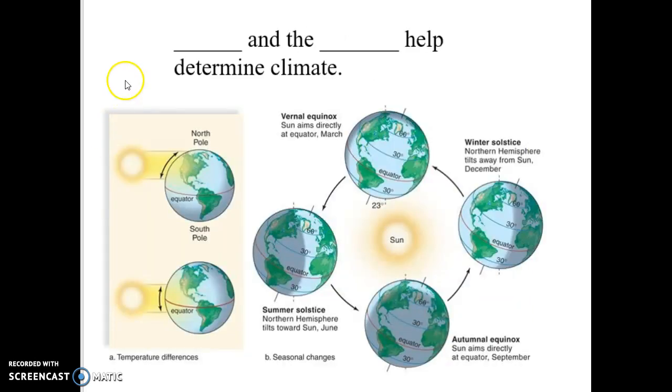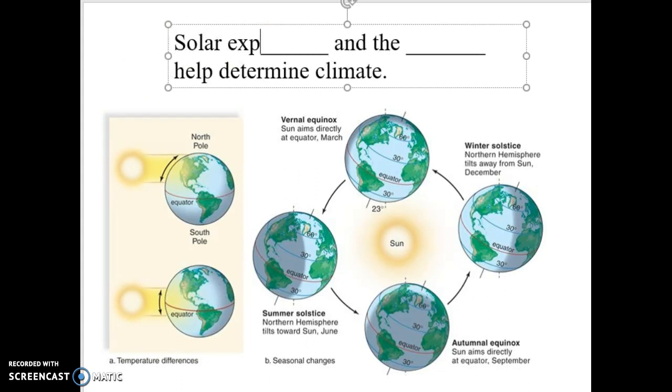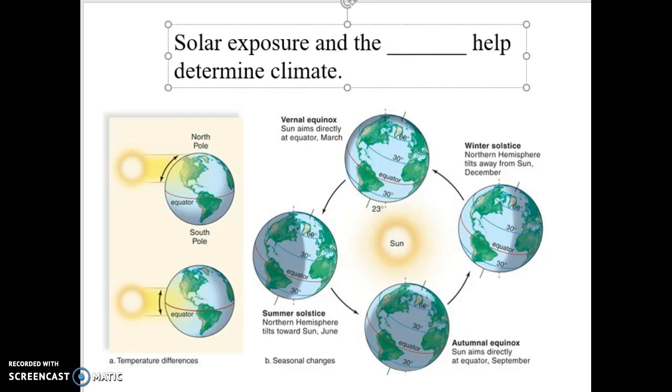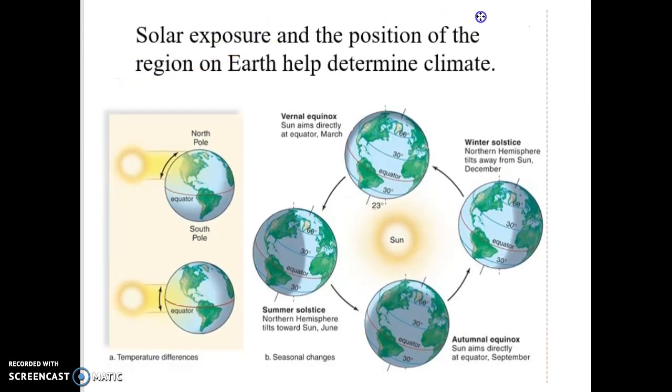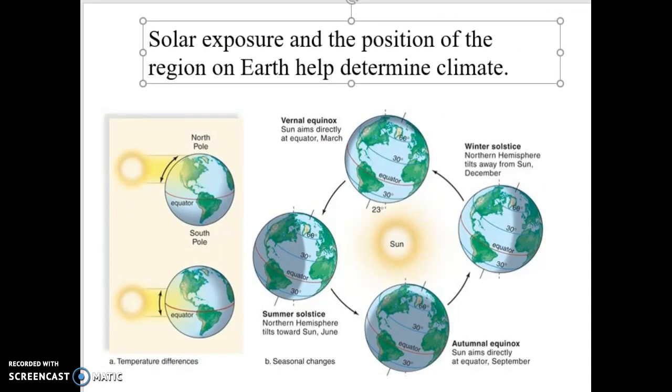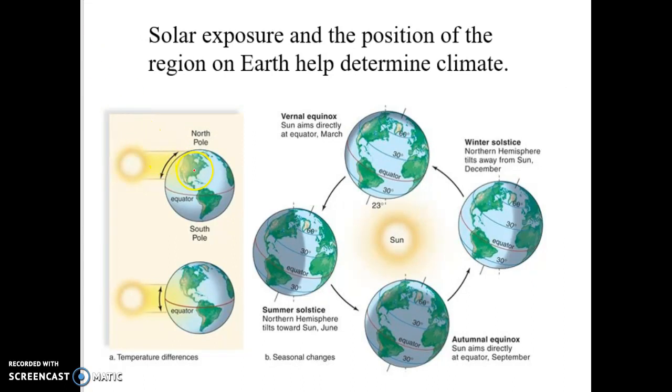Solar exposure and the position of the region on Earth all help determine the climate that a region experiences. For those of us in the Midwest, consider where we are on the Earth geographically. Depending upon the time of year, if the Earth is tilted towards the sun, we get a lot of solar exposure. That means we have summer, longer days, more sunlight, it gets hotter.